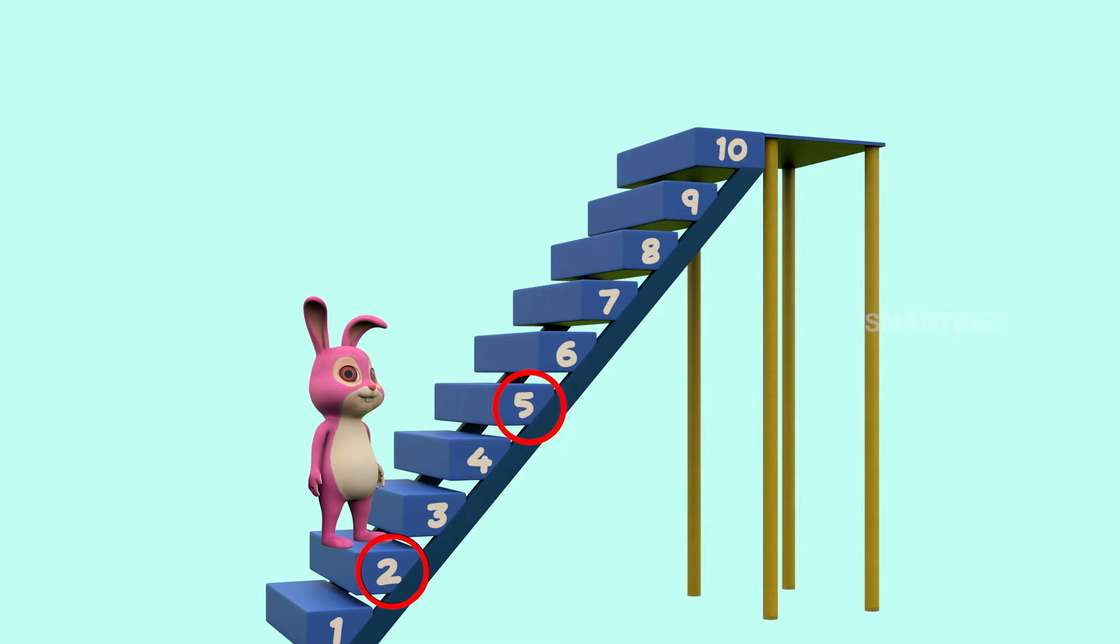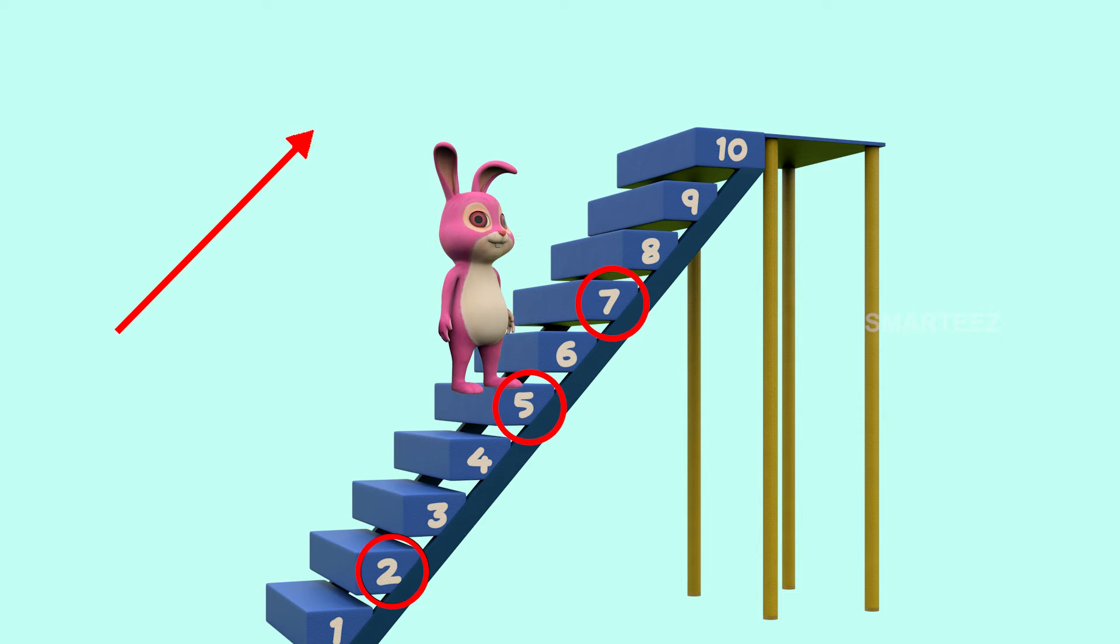2, 5 and 7 are in ascending order. As you can see, these numbers go up the stairs.